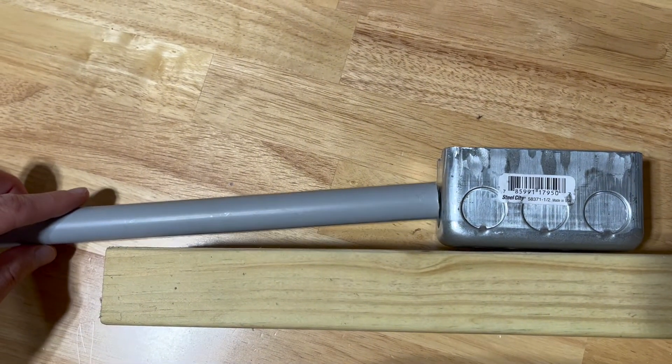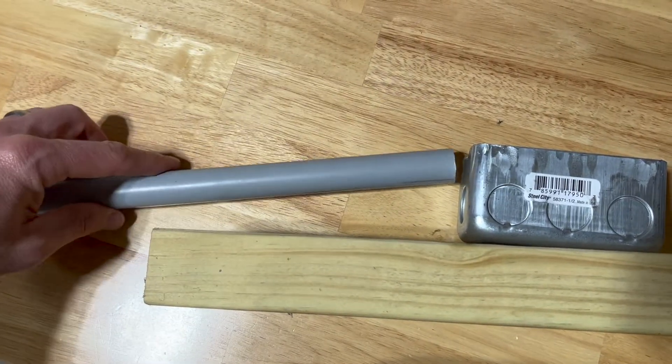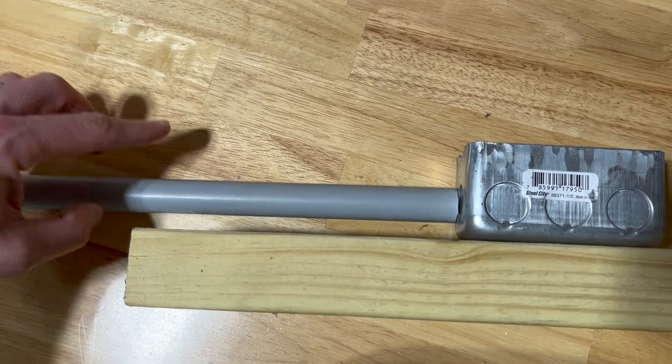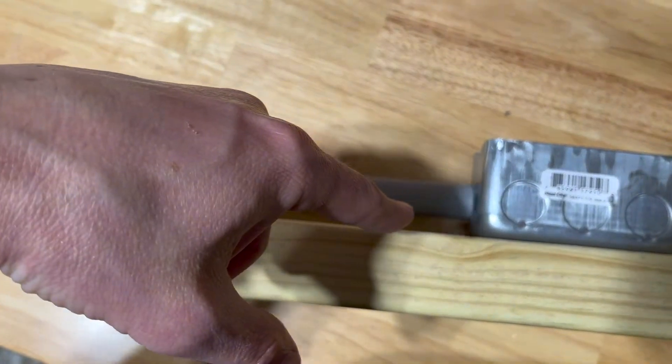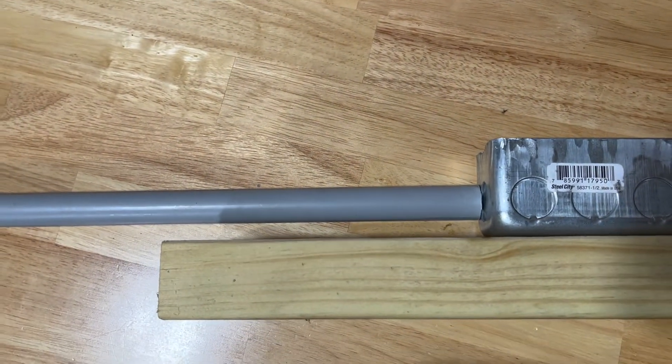So what you want to do is take a heat gun and heat this up right here and make two small bends to where basically it's coming out of the bottom of the electrical box straight, and then it's bending back, and then bending again and going flush against the wall. So I'll show you how to do this real quick.